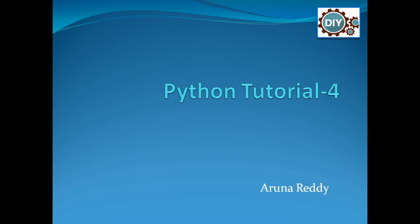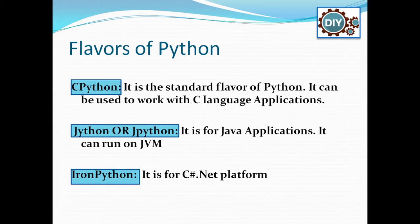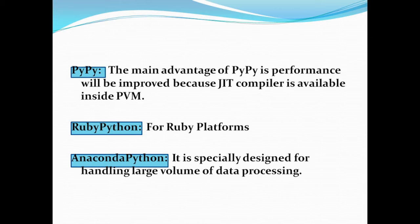Coming to the different flavors of Python, we have different versions for different platforms. We can work with Python applications on the Java platform, C#, and C. CPython is the standard flavor — it can be used to work with C language applications. Jython is mainly for Java application development and can run on the JVM. IronPython is specially designed for the C# .NET platform. PyPy is mainly to improve the performance of your Python virtual machine by making use of a JIT compiler. We also have RubyPython for Ruby platforms.